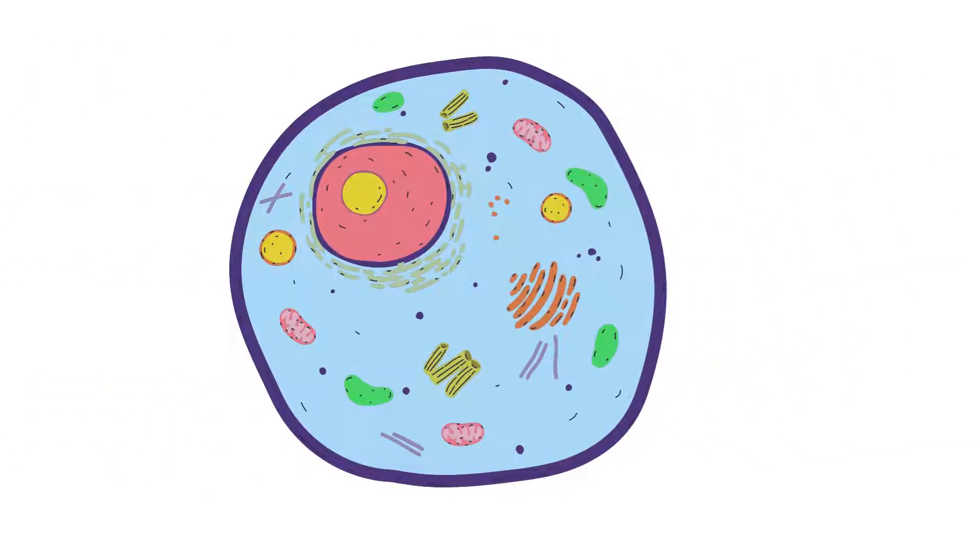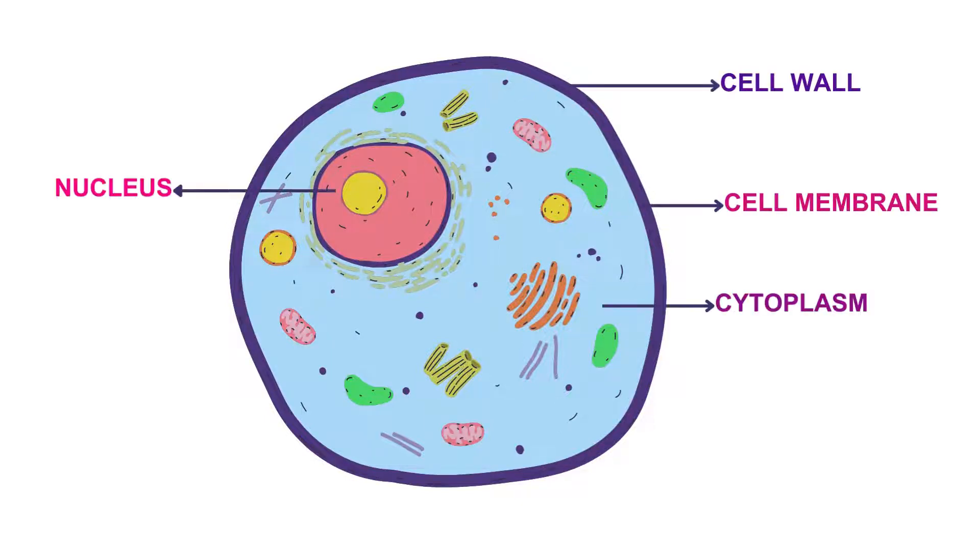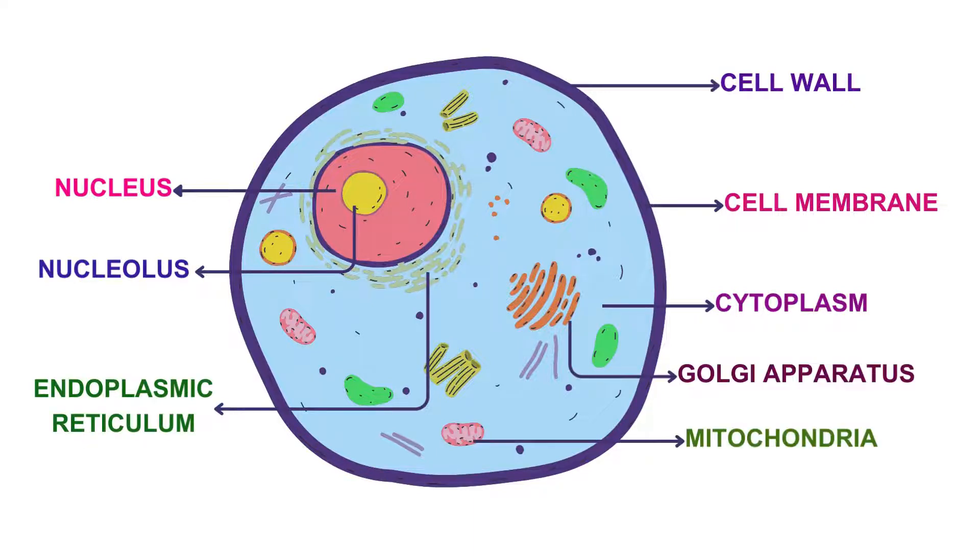If we look at the basic structure of a cell, it has a cell wall, cell membrane, cytoplasm, nucleus, endoplasmic reticulum, Golgi apparatus, mitochondria, lysosomes all present in the cell. Now, let's look at them in more detail.